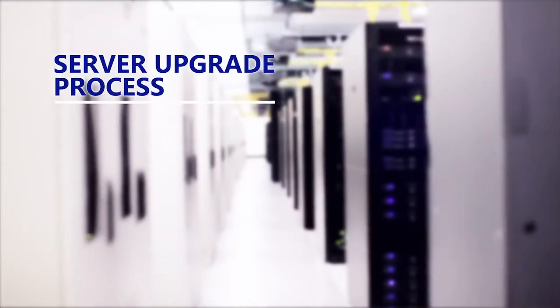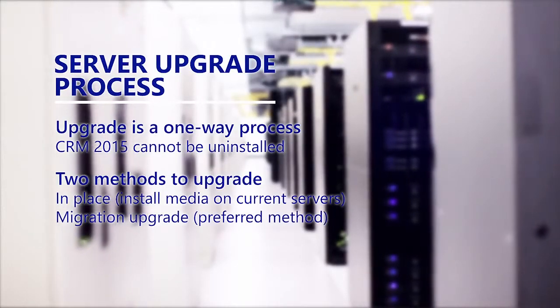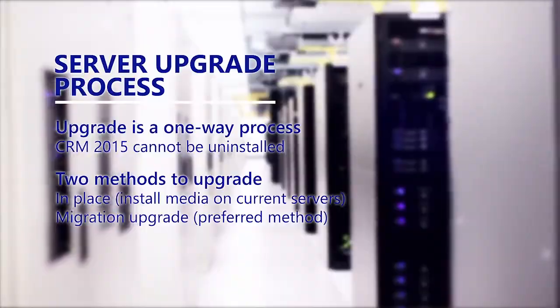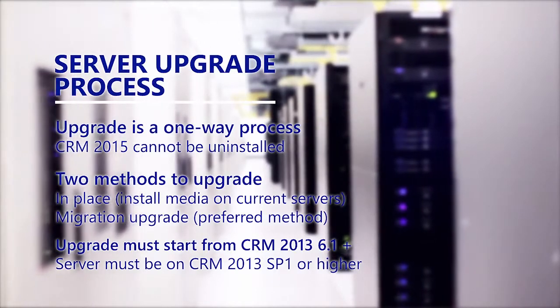For on-premise customers, upgrading is a one-way process. We provide two methods of upgrade: upgrade in place, where you install the media on top of your existing servers, or a migration upgrade. Migration upgrade means deploying another CRM instance with a separate database and migrating your organizations from one database to the other. This is how we do most upgrades for CRM online. The migration upgrade is preferred because it gives you the most efficient way to fall back to CRM 2013 if needed. Upgrades must start from CRM 2013 Service Pack 1, which is version 6.1.